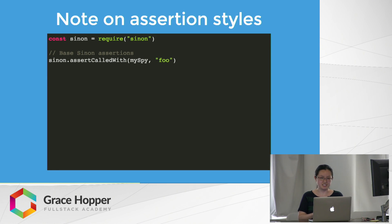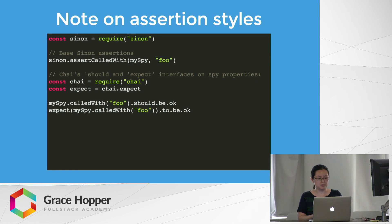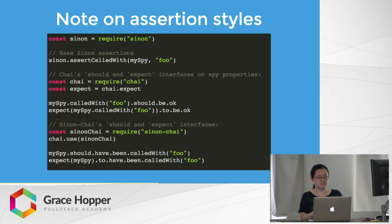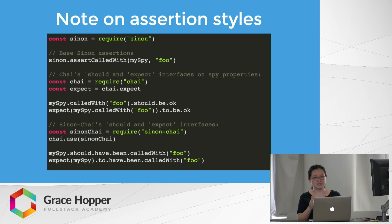Sinon actually comes with its own set of assertions — all you have to do is import Sinon and you can use them. If you prefer Chai-style should and expect type assertions, you can use Sinon spies with Chai-style assertions. There's also a module called sinon-chai, which connects Sinon with Chai-style assertions so they look a bit more natural. For example, you can say 'expect mySpy to have been called with foo' instead of 'expect mySpy.calledWith(foo).to.be.ok', which is a little awkward. There's no one correct assertion style, so use whatever you prefer.